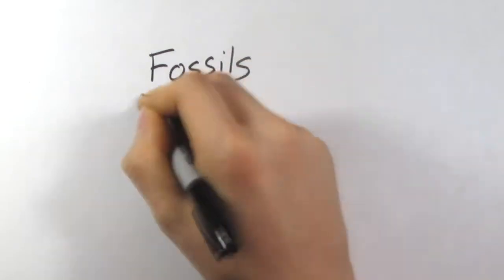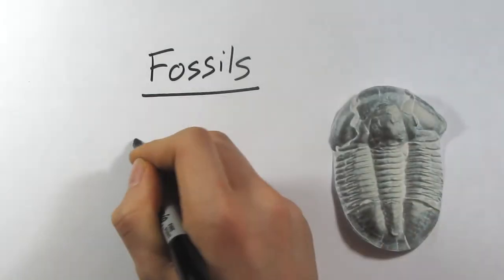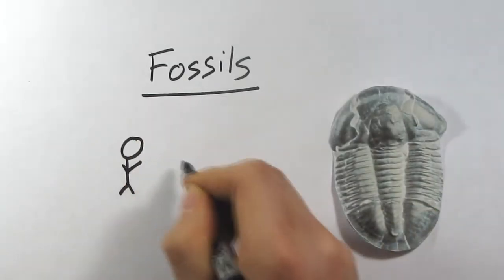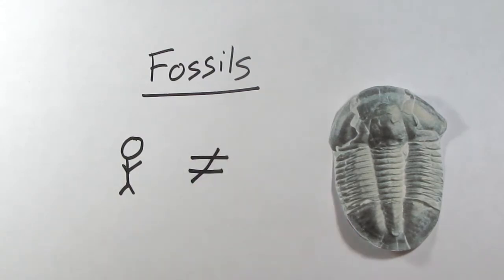First, fossils. The fossil record shows that organisms that lived long ago were different from those that we see today. Sounds obvious, but 200 years ago, it seemed a little bit crazy.